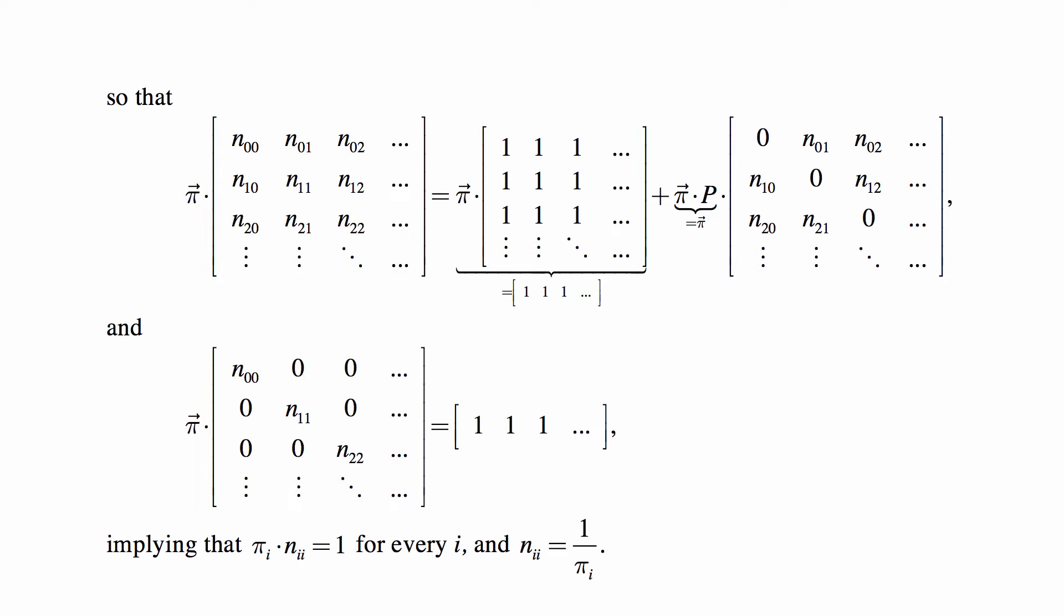So what we end up with is π times the matrix of Nijs on the left-hand side, and on the right-hand side too, except that it has zeros along the diagonal. So other than those things on the diagonal, everything else can be cancelled out. Or you can just move the second matrix from the right-hand side and subtract it from the matrix on the left-hand side. And what is left is just π times the diagonal matrix that has N₀₀, N₁₁, N₂₂, and so on in it. And that is equal to the vector of ones. And that tells you that π times Nii is equal to 1 for every i, so that Nii is equal to 1 over πi.